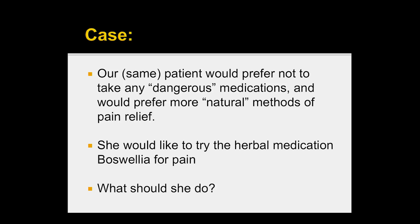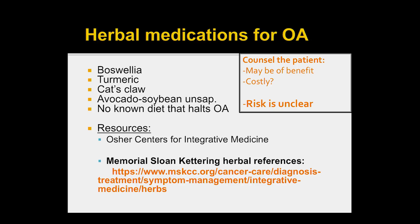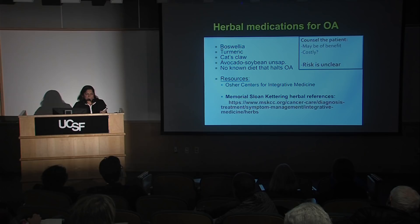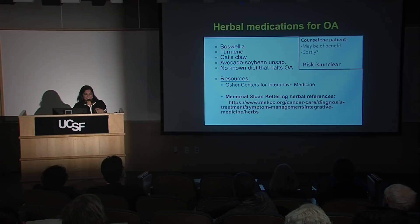Going back to this patient — with all these options and adverse risk information — she says she'd like to try something natural and safe, which many patients prefer. Herbal medications may play a role in helping OA pain and improving function; she wants to try Boswellia, for example. There are open-label trials for some of these, but there's really not strong data at a level sufficient to make a strong recommendation. Many are probably safe if monitored, but they're often expensive, not FDA-regulated, and we don't always really know what's in them.